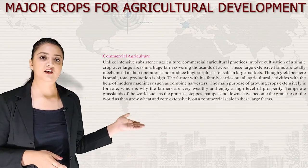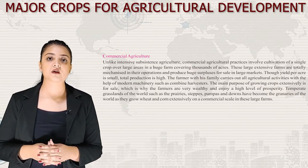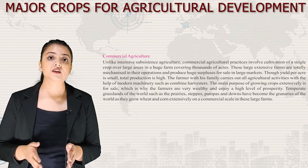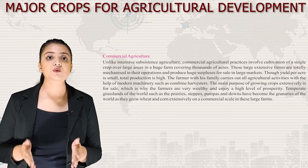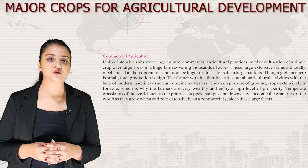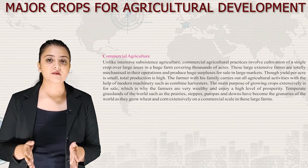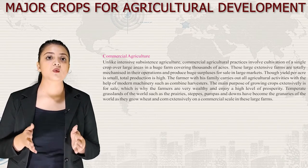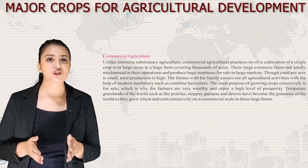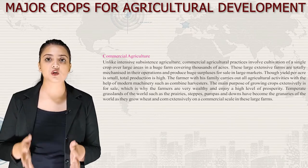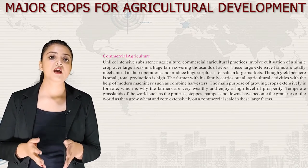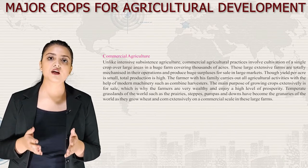Next we have commercial agriculture. Unlike subsistence agriculture, commercial agricultural practices involve cultivation of a single crop over a large area in a huge farm covering thousands of acres. These large extensive farms are totally mechanized and produce huge surpluses for sale in large markets. Temperate grasslands such as the prairies, steppes, pampas and downs have become the granaries of the world, growing wheat and corn extensively on a commercial scale.